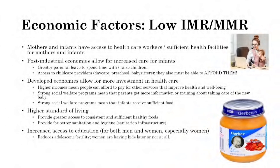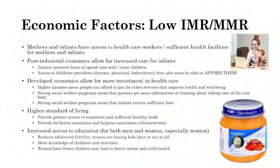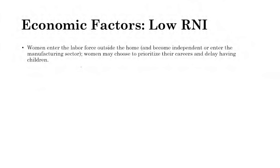Women having fewer children means they can care for each child better. Regarding low natural increase rates and slow population growth: women entering the labor force outside the home may choose to prioritize careers or delay having children. Women have a biological clock, so delaying childbirth typically results in fewer children overall. Families no longer need large families for farm labor as farming becomes more corporate and business-oriented.